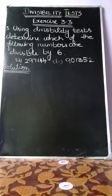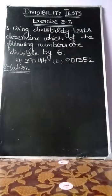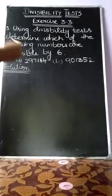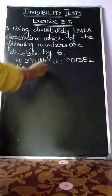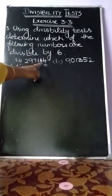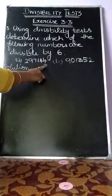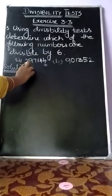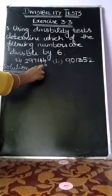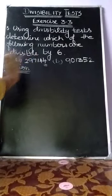What is our given value? First subdivision: 297144. Just check the ending value — the unit digit place value is 4, which is an even number. So this number is divisible by 2. So 297144 is divisible by 2.